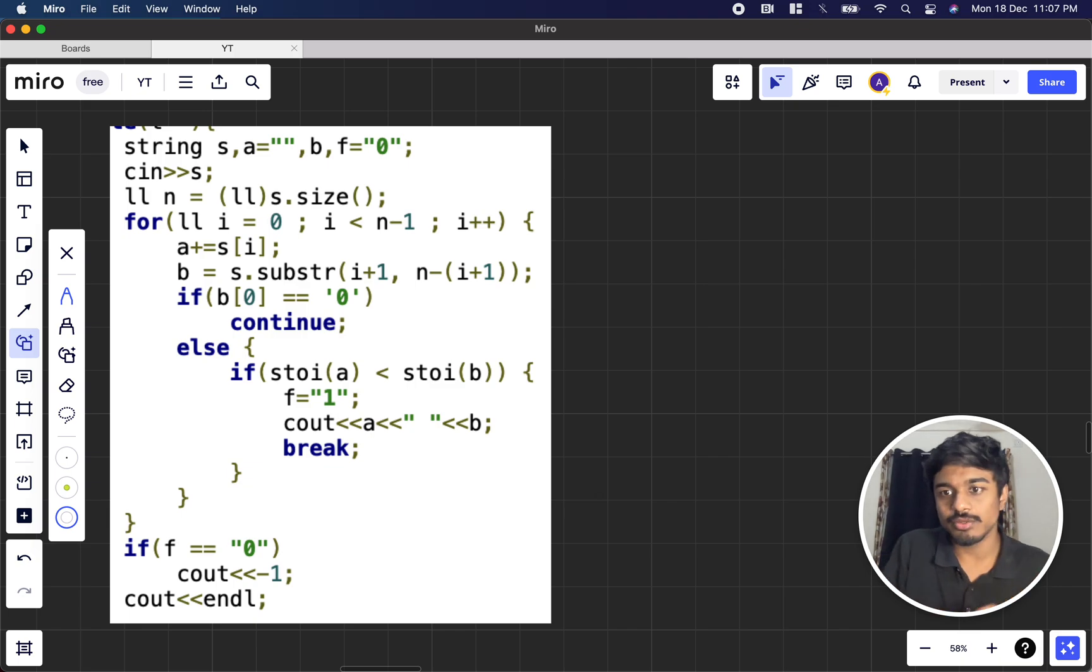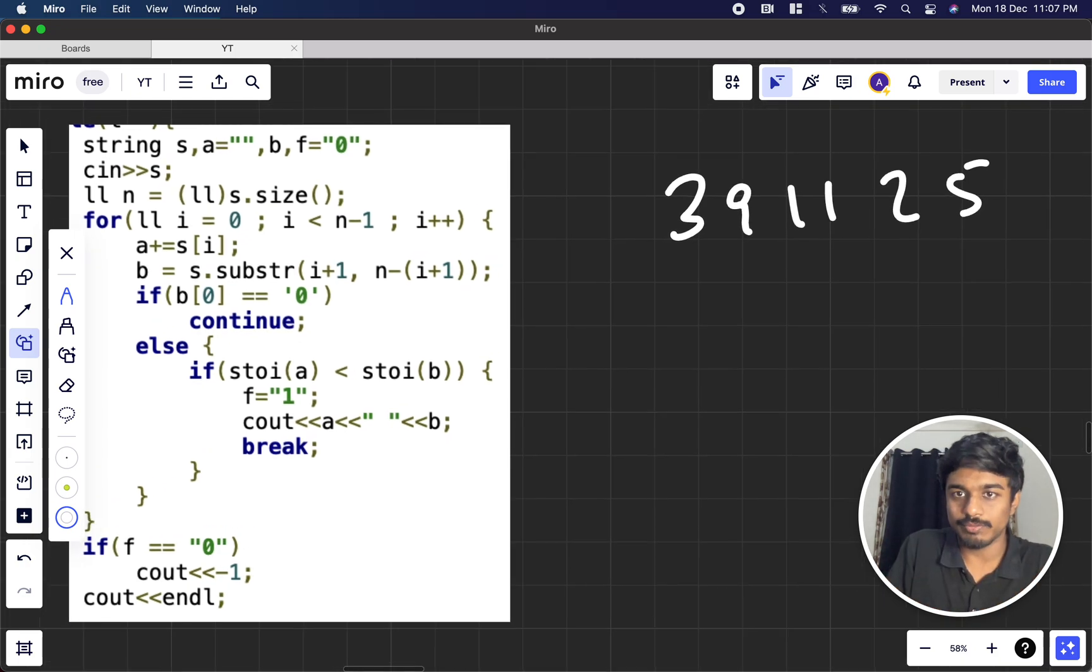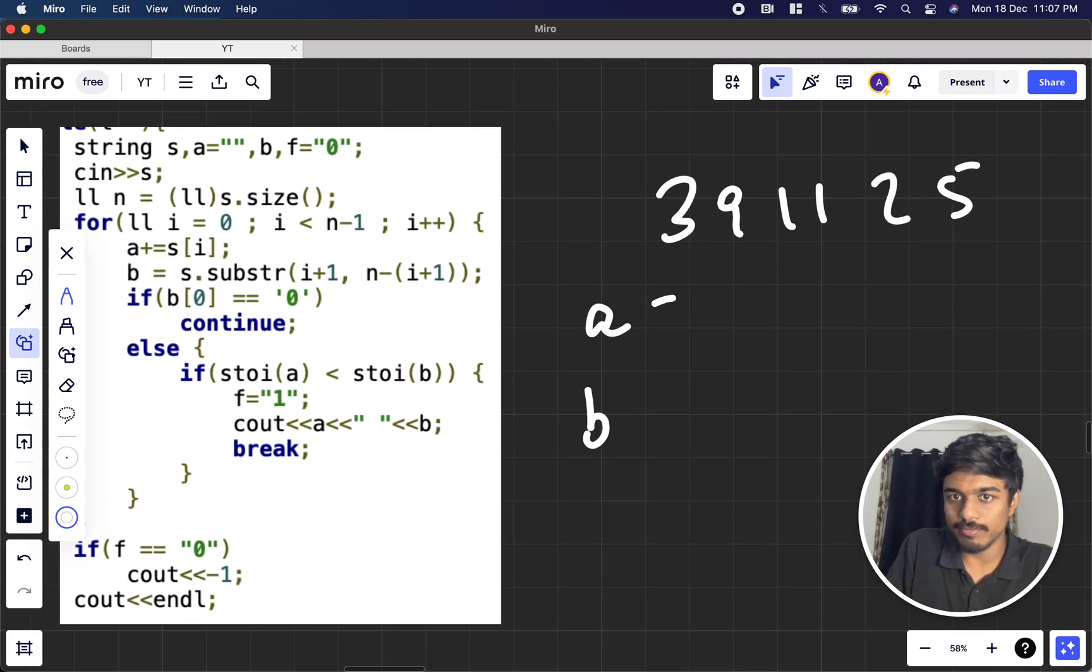How do we do this? You take two strings and iterate through all the numbers. For example, we can take 39 1125. I have an array called a, I have an array called b. a plus s[i] means this is a string, and we append 3 here.